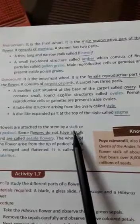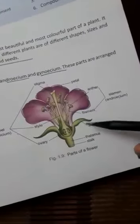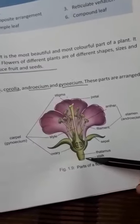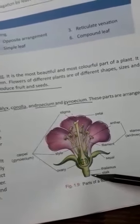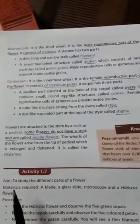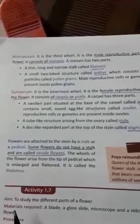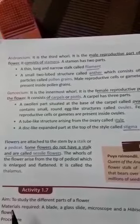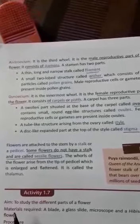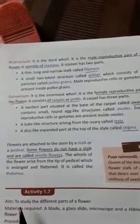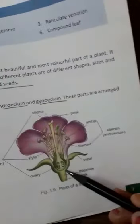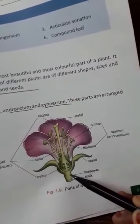Flowers are attached to the stem by a stalk, also called a pedicel, as seen in the diagram. Some flowers do not have a stalk and these are called sessile flowers. These four whorls of a flower arise from the tip of the pedicel, which is enlarged and flattened. This enlarged and flattened part is called the thalamus.